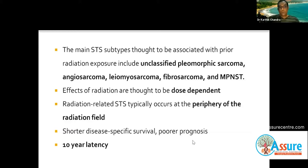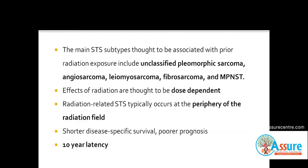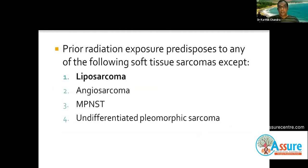Radiation-related soft tissue sarcomas have poorer prognosis and shorter disease-specific survival. Usually there is a period of at least around 10 years for a sarcoma to develop in a prior radiation field. So liposarcoma is the answer, because angiosarcoma, MPNST, and undifferentiated pleomorphic sarcoma are all radiation-associated. That's the first question.